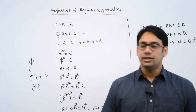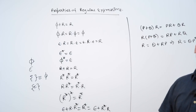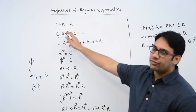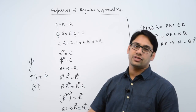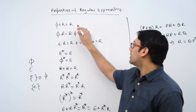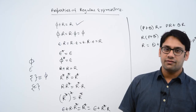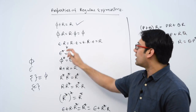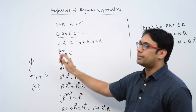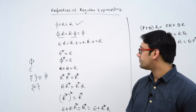Here r is representing a regular expression. If you do a union of any regular expression with an empty set, then you will get that particular regular expression. In the same way, if you concatenate any regular expression with an empty set, then you get an empty set.